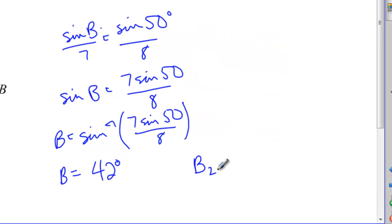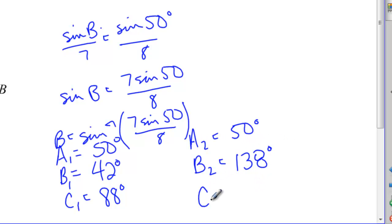Now I also have to check to see the supplement. So B2 supplement is 138, because 138 and 42 is 180. Now here's where the fun part comes in. A1 is 50 degrees, and if A1 is 50 degrees, that means C1, the angle C in the first triangle, this would be 88 degrees. That works. If I let A be 50 degrees in triangle 2, and I do 50 plus 138, that would mean angle C in triangle 2 would be negative 8 degrees. Now we can have negative angles, but we can't have negative angles in triangles. And so this right here would not work, and I would not be able to have that triangle.